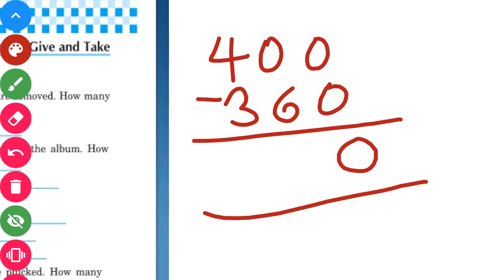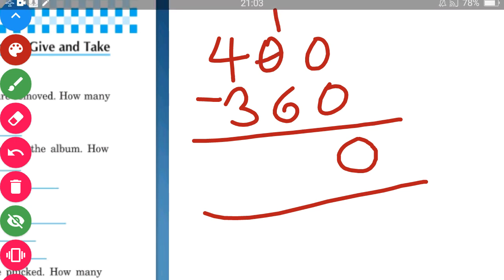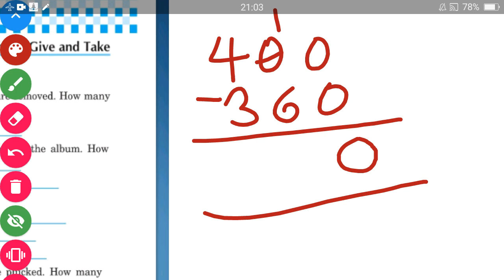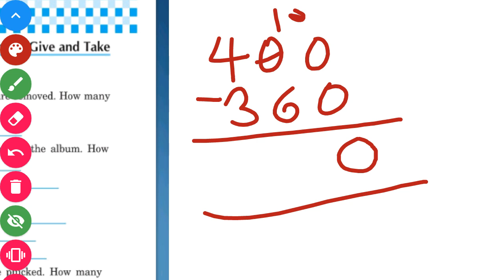The zero at the tens place will borrow from the hundreds place, so the hundreds digit becomes 3 and the tens digit becomes 10. 10 minus 6 gives us 4. At the hundreds place we now have 3 minus 3, which gives us 0. So 400 minus 360 equals 40.